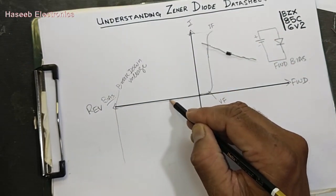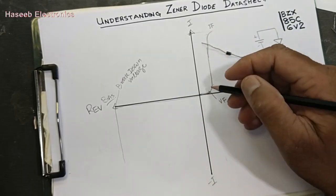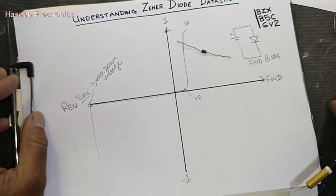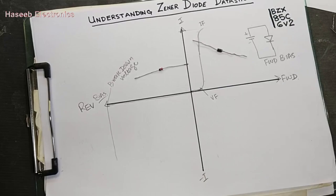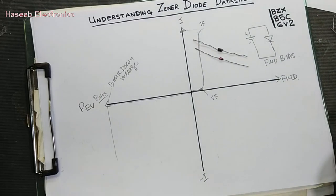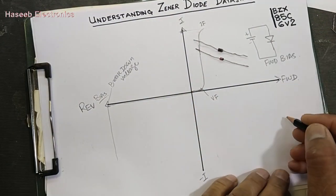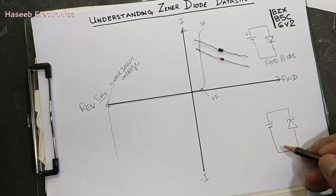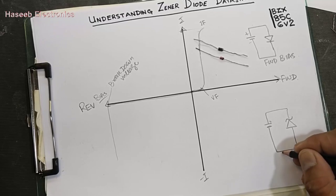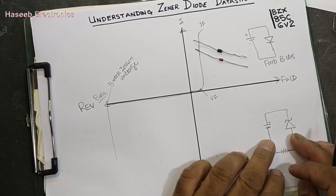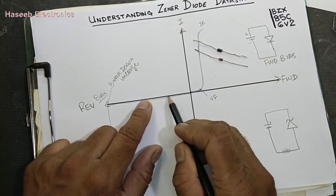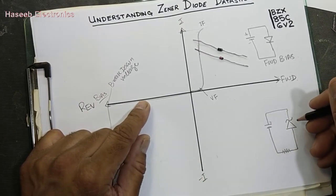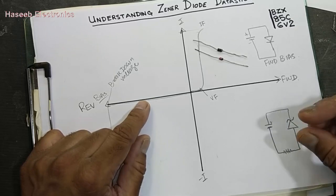In the reverse region there is a small leakage current due to minority carriers — it is negligible. In the forward condition there is also a minority carrier current, which is negligible and called leakage current. When we discuss a zener diode, in forward condition it behaves the same as a regular diode. But if we connect it in reverse bias, the zener diode — which has a Z-shape symbol — has positive connected to cathode and negative to anode, with a load resistor in series. Initially it will not allow current to flow because it is reverse biased.